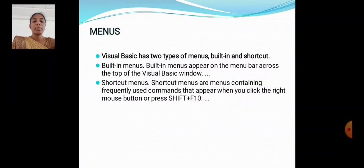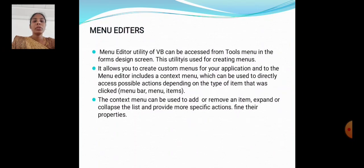Menus: Visual Basic has two types of menus — built-in and shortcut. Built-in menus appear on the menu bar across the top of the Visual Basic window. Shortcut menus contain frequently used commands that appear when you right-click the mouse or press F10. The Menu Editor utility in VB can be accessed from the Tools menu in the form design screen. This utility is used for creating menus and allows you to create custom menus for applications, including a context menu. A context menu can be used to directly access possible actions depending on the type of item clicked, and it can be used to add or remove items, expand lists, and provide more specific actions.